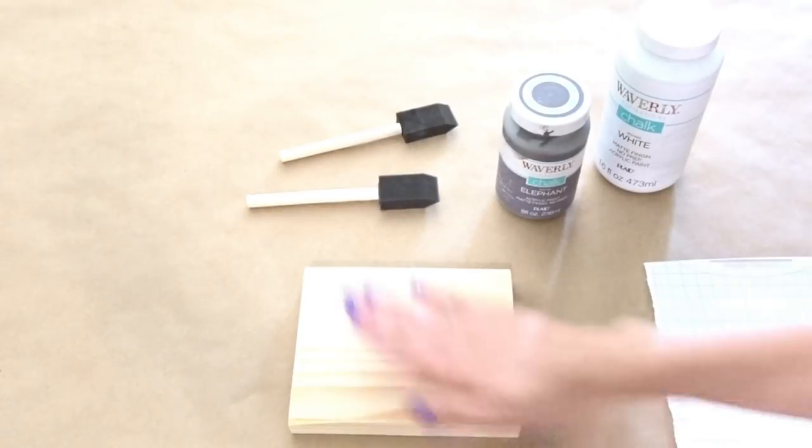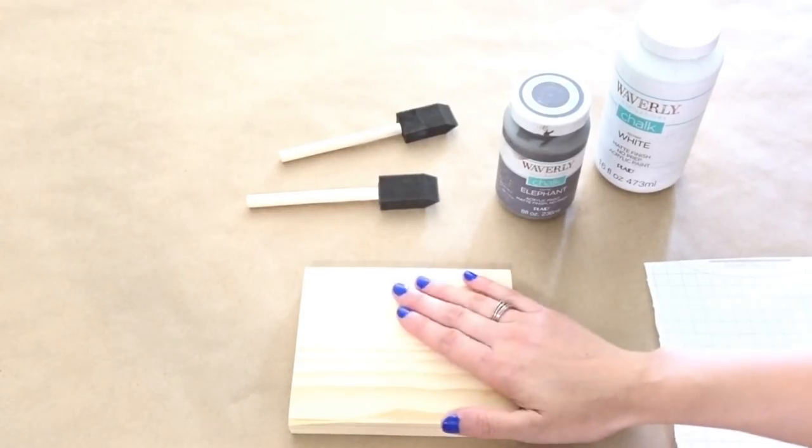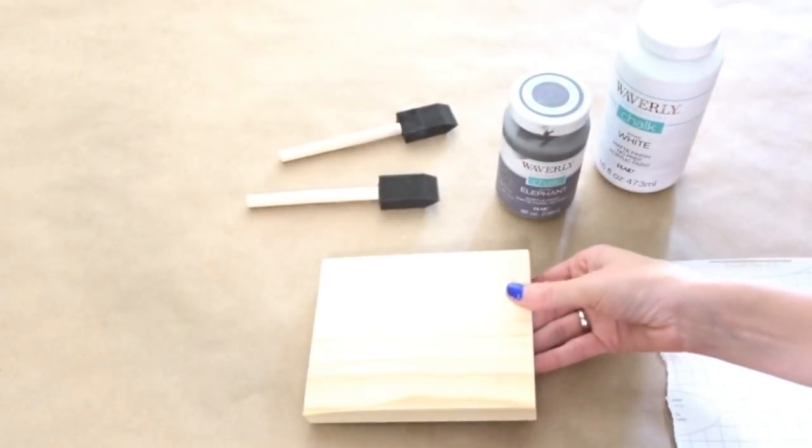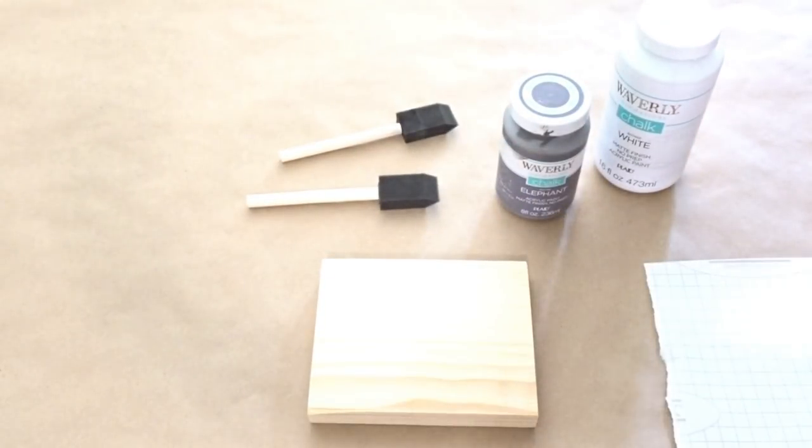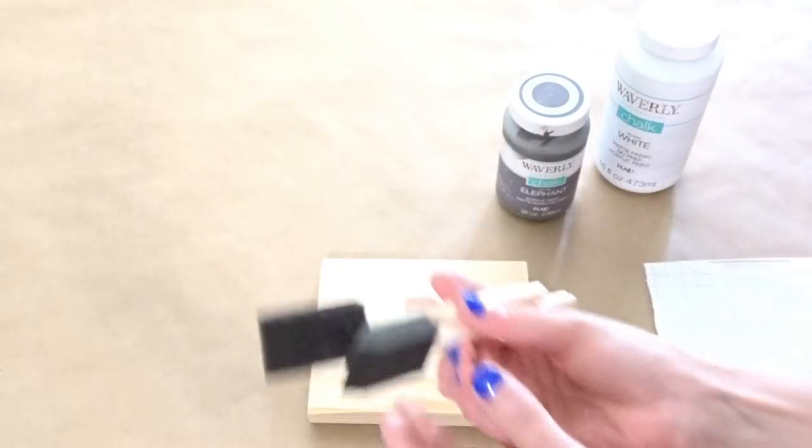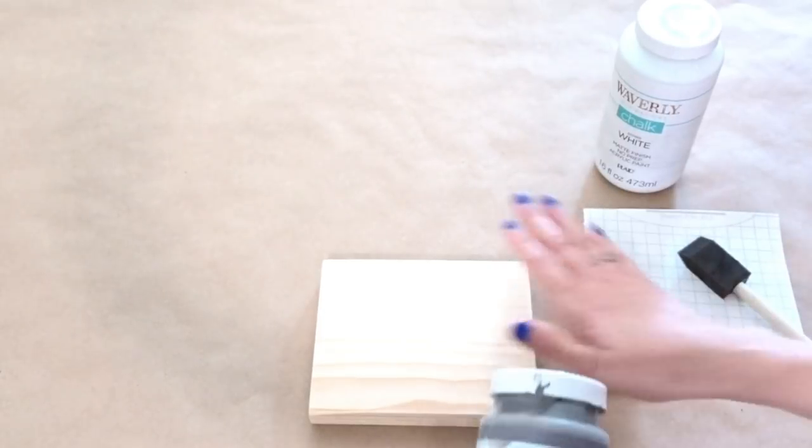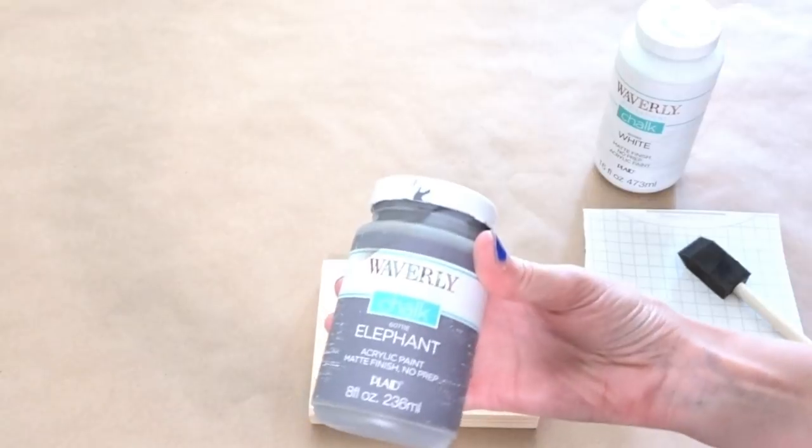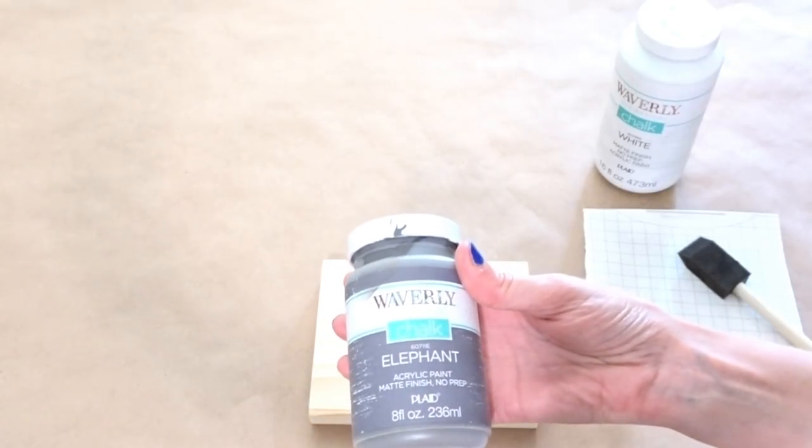So I have my surface prepped and ready to go. I'm just using a piece of pine here to show you an example. It's all sanded down and cleaned off. And then I'm going to be using some foam paint brushes. First thing I'm going to do is just give this piece of wood a coat of the elephant chalk paint.